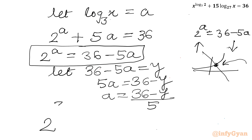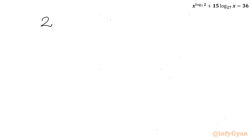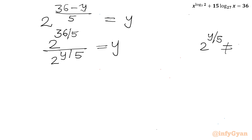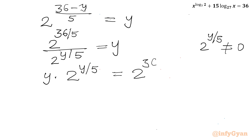Substituting the value of a and setting the right-hand side equal to y, I write 2 power (36 minus y divided by 5) equals y. Using the exponent property, I can write 2 raised to the power 36 over 5, divided by 2 raised to the power y over 5, equal to y. Cross-multiplying — since 2 power y over 5 cannot be zero — gives y times 2 raised to the power y over 5 equal to 2 raised to the power 36 over 5.